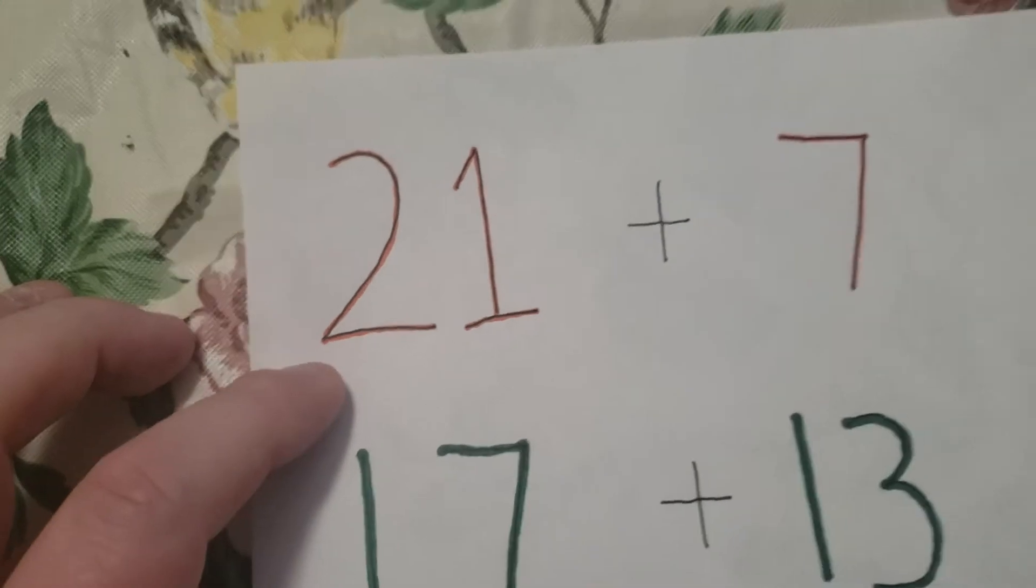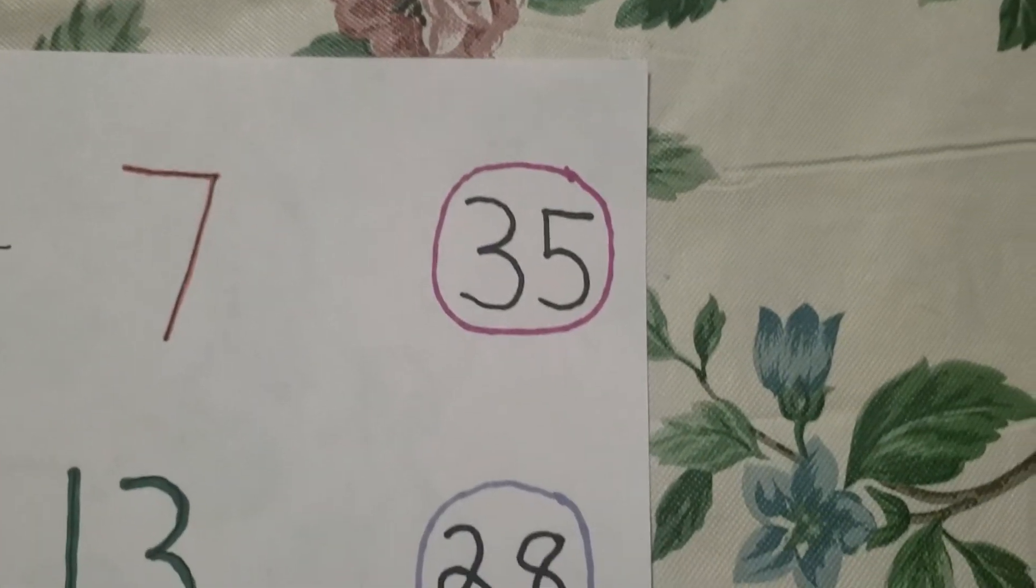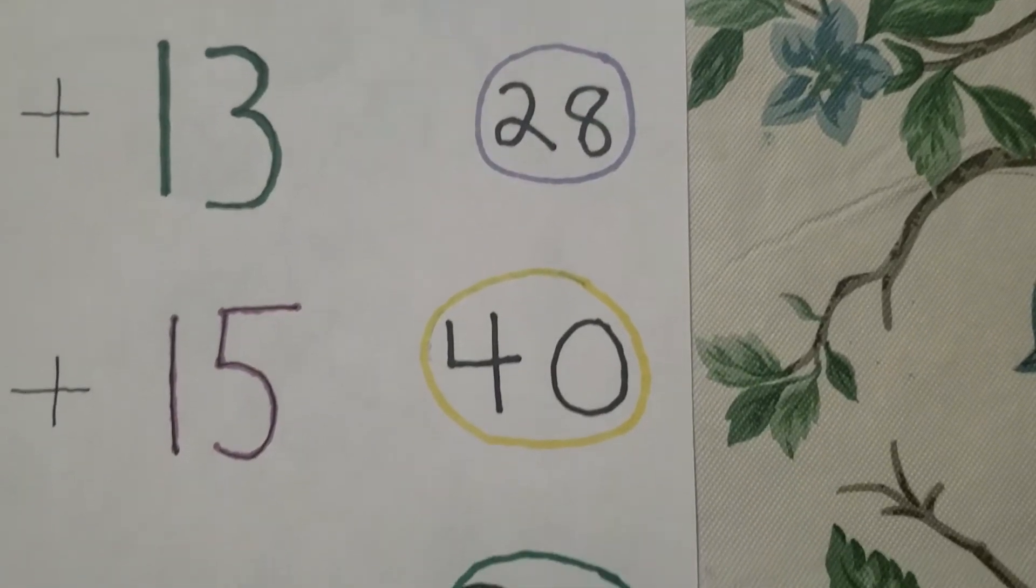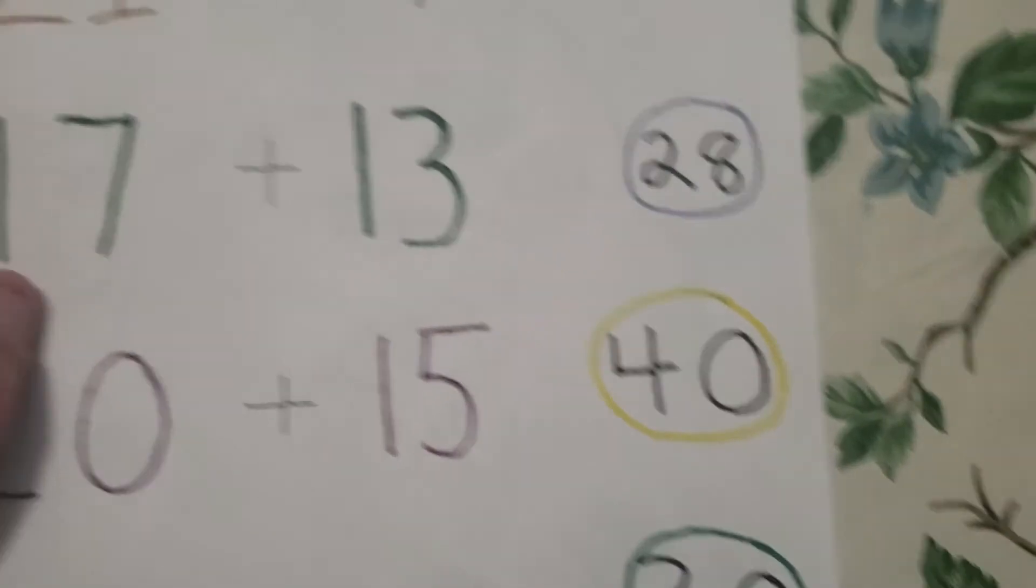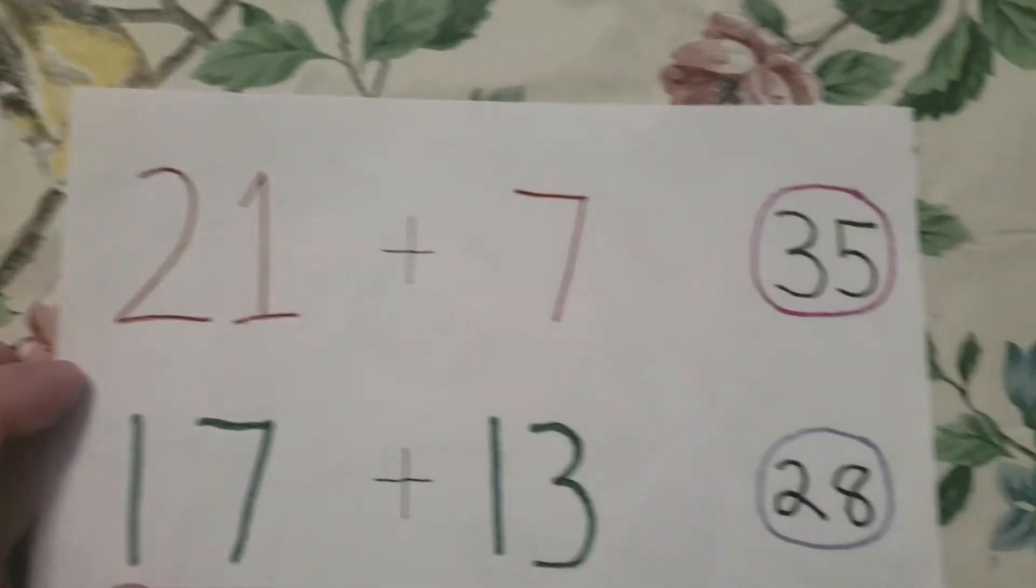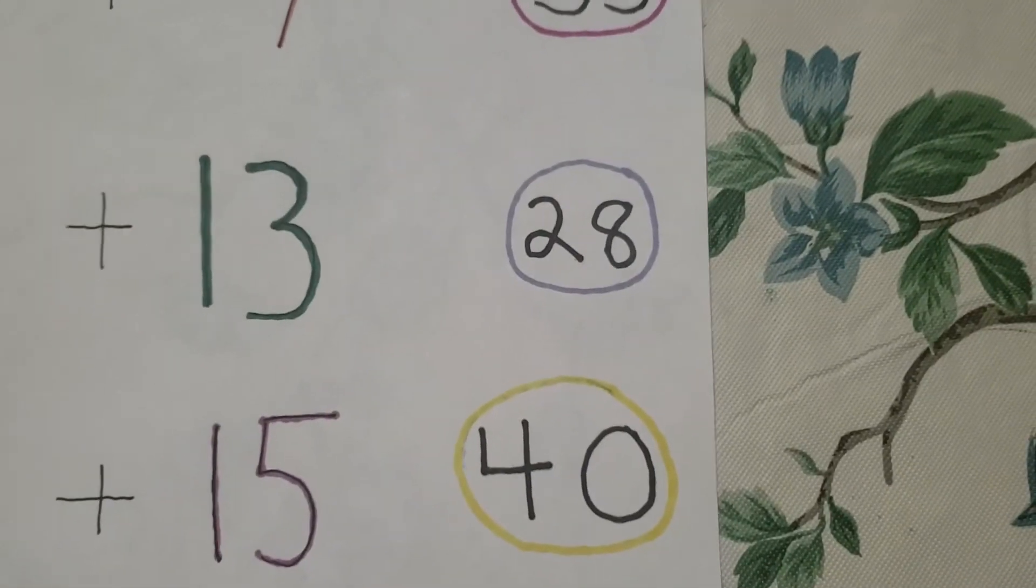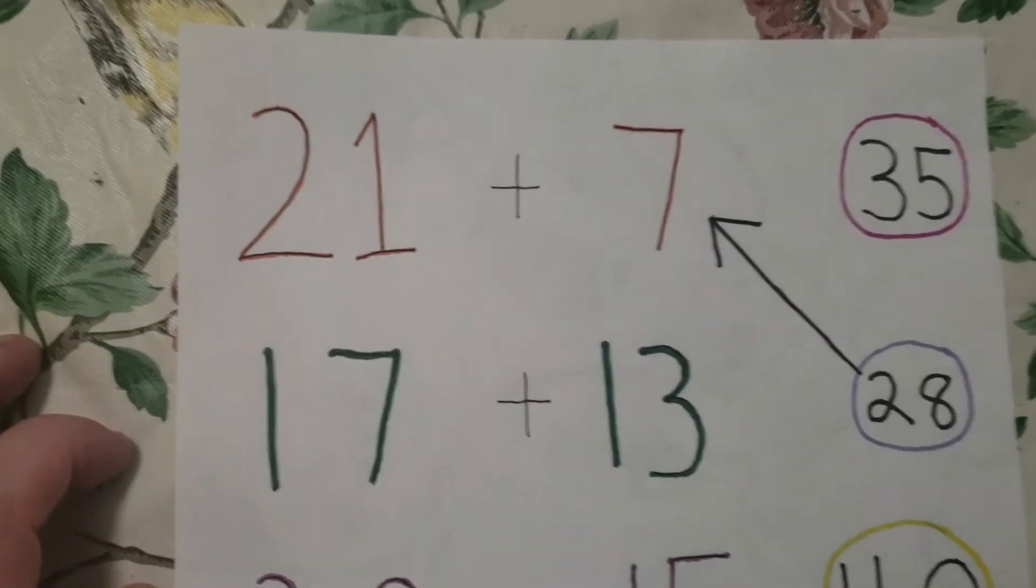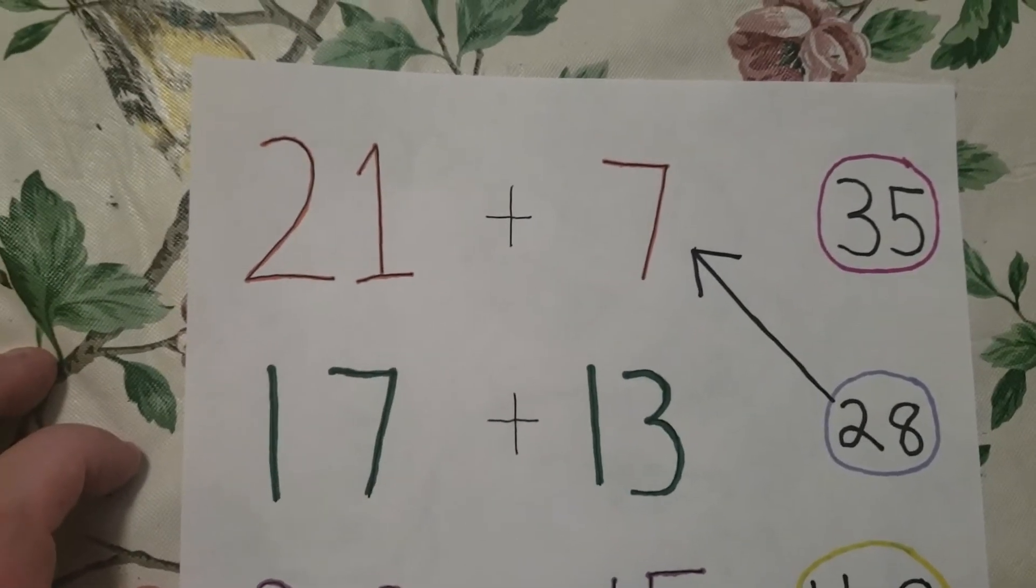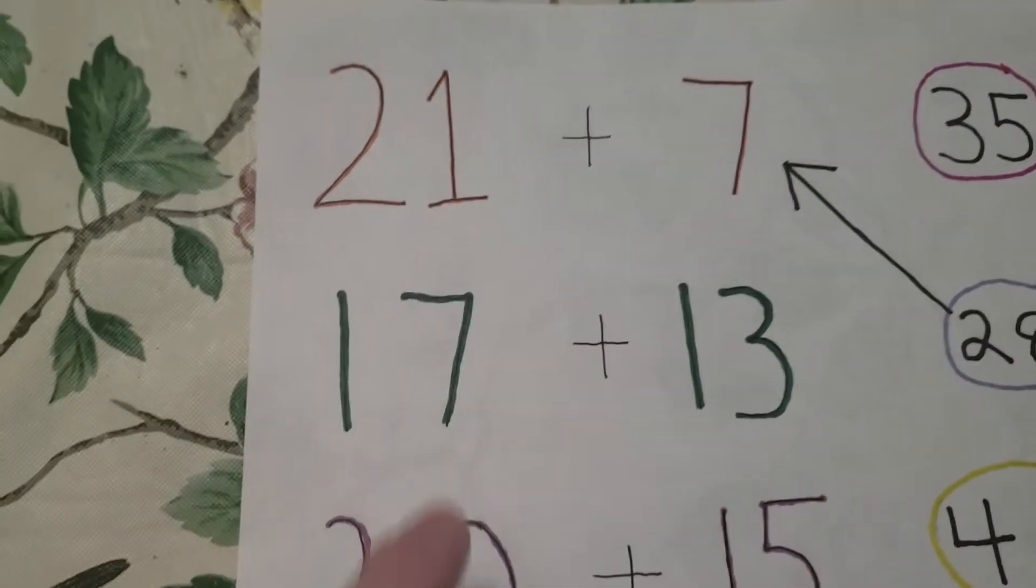So we have 21 plus 7. Now I want to look through these and I want you guys to tell me which one of these is the correct answer to 21 plus 7. Is it 35? Is it 28? Good job! So we put an arrow from 28 to 21 plus 7 because 21 plus 7 equals 28. Now we know that 28 is not equal to any of these last problems we have. So let's go to the next one.